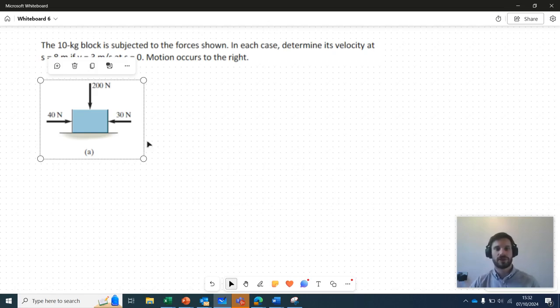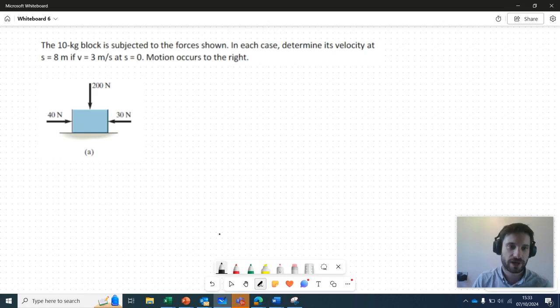Okay, so hello and welcome to this video tutorial for E411 statics and dynamics of simple mechanisms. So we have this problem here. It states the 10 kilo block is subjected to the forces shown. In each case, determine its velocity at S equals A if V is equal to three when S is equal to zero, motion occurs to the right.